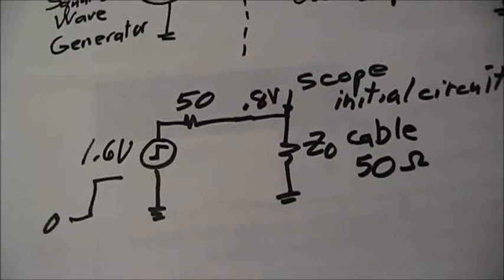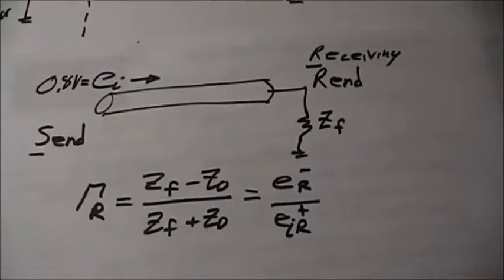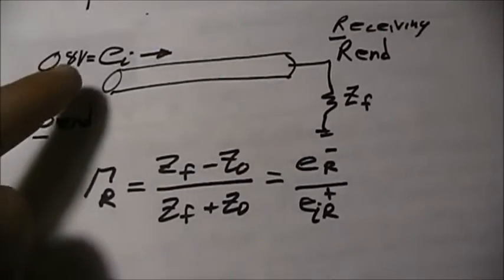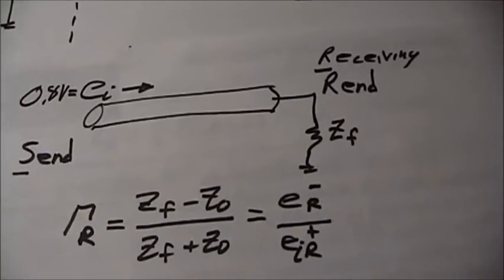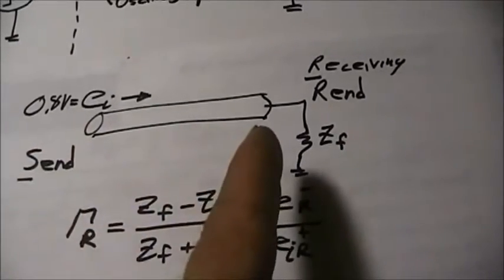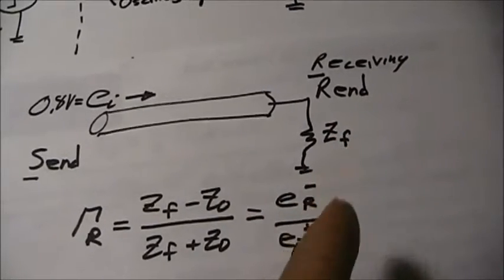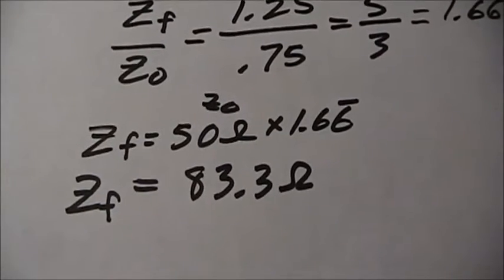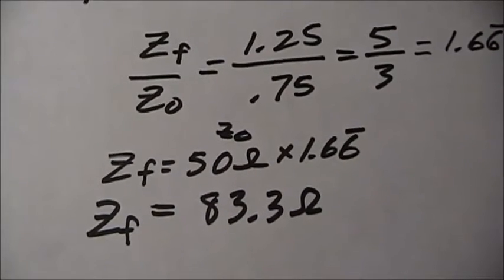Half of that voltage is lost in the impedance match. This is very common that you lose half of your voltage in the source to cable connection. Even though we don't like to lose voltage, it's important to keep everything matched. Now let's move on to the wave traveling down the line. We have 0.8 volts being sent down the line as the incident voltage. That's going to travel down the line in two and a half microseconds and reach the fault at the receiving end.